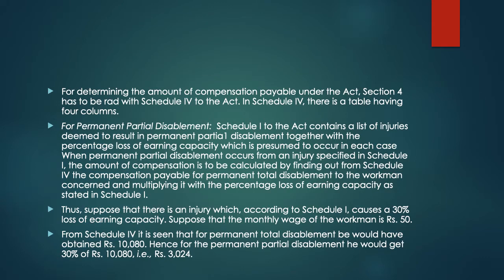To determine the amount of compensation payable under the Act, Section 4 must be read together with Schedule 4, which contains a table with four columns. For permanent partial disablement, Schedule 1 to the Act provides a list of injuries deemed to result in permanent partial disablement, along with the percentage loss of earning capacity presumed to occur in each case.